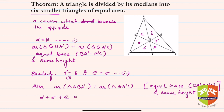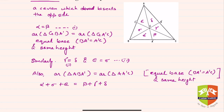This means alpha plus sigma plus epsilon equals beta plus gamma plus delta. Since alpha equals beta, we can cancel those. We get sigma plus epsilon equals gamma plus delta. Since epsilon equals sigma and delta equals gamma, we can write two sigma equals two gamma.